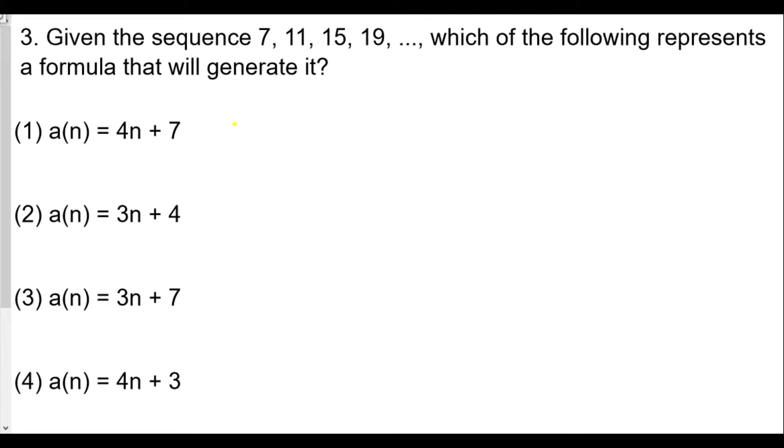when we plug in 1, we have 4 times 1 plus 7 is equal to 11. A2 is 4 times 2 plus 7 is equal to 15. Not going to be that one. From the beginning, we can tell it's not going to be that one. It can't be this one.